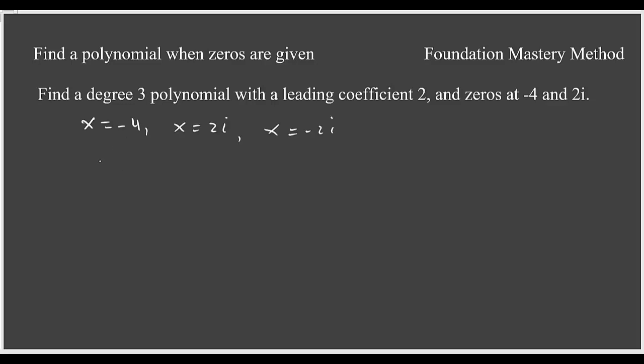So we list the zeros. We have x equals negative 4, x equals 2i and x equals negative 2i.